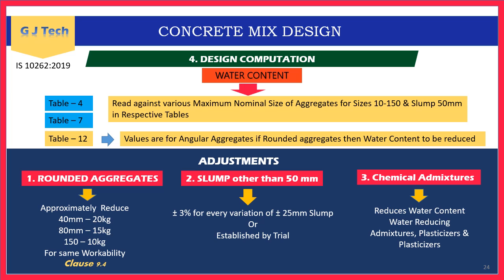Water content computation: water content is referred with respect to maximum aggregate size from Tables 4, 7, and 12, which give values for 50 mm slump and angular aggregates. Adjustments required: for rounded aggregates, reduce water content by 10 kg (150 mm), 15 kg (80 mm), or 20 kg (40 mm). For slump variation of ±25 mm, adjust water content by ±3%.